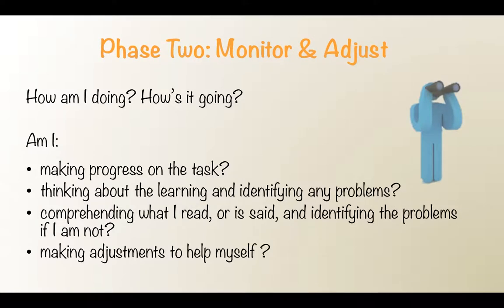Moving on to phase two: monitoring and adjusting. Here's where we've already got a plan of action, and now as we implement that plan and start working on the assignment, we monitor our own learning and pause to see — am I making progress on the task? Am I struggling with any aspect? Have I made adjustments to help myself or asked others for support? Here's the sticky wicket: sometimes students don't know they are struggling. They don't realize they have gone off track. This is, in my opinion, one of the most difficult aspects of teaching self-awareness.